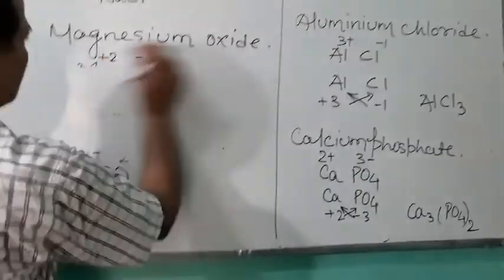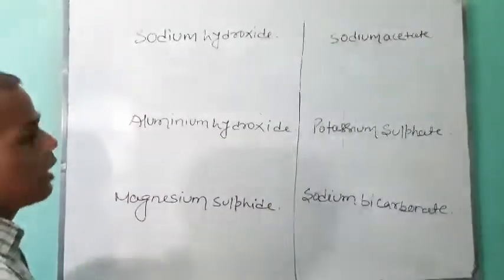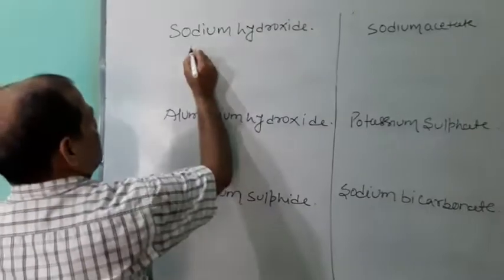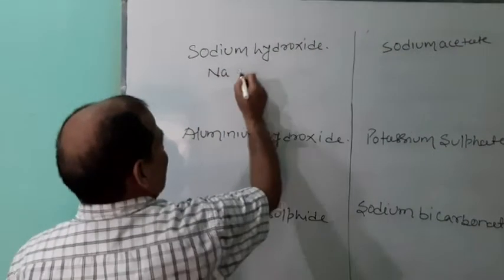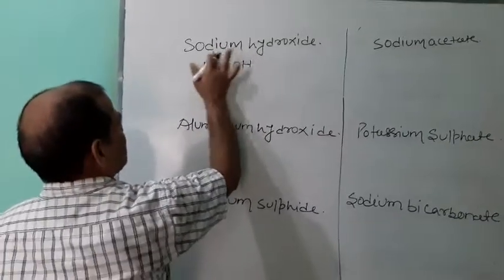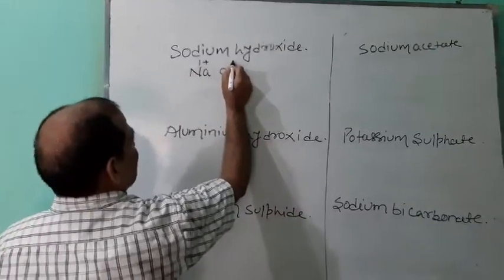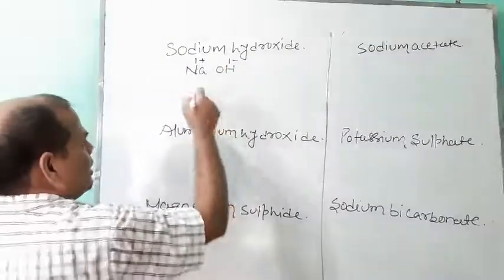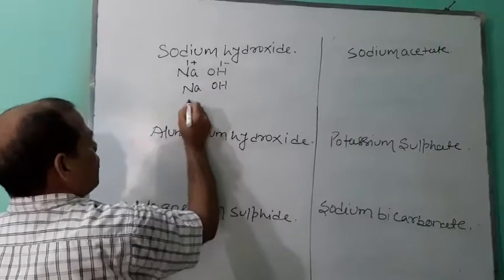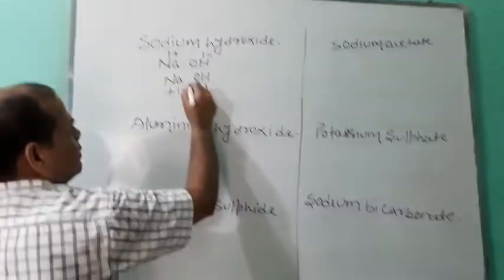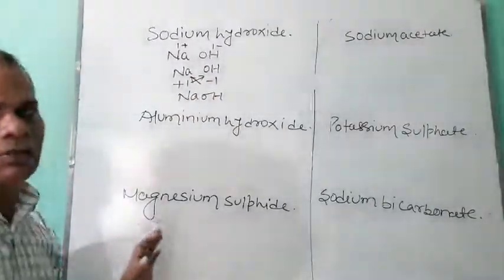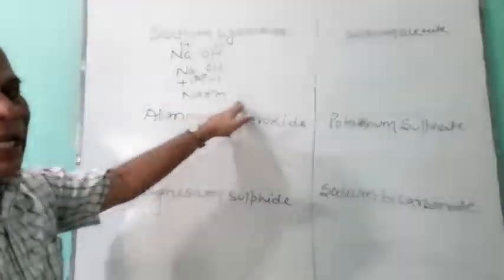Now the chemical formula of sodium hydroxide. The symbol of sodium is Na; hydroxide is OH. Sodium has one unit of positive charge; hydroxide has one unit of negative charge. Bring down NaOH, plus one, minus one, and cross each other. The chemical formula of sodium hydroxide is NaOH.